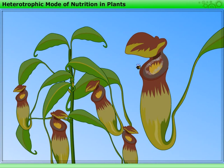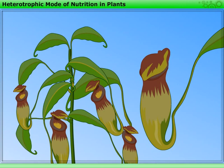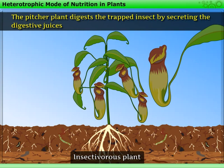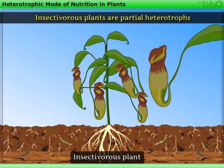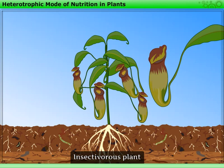Now let us see how this plant traps insects. When an insect lands in the pitcher, its lid closes. Thus, the insect gets trapped and entangled in the hairs. The pitcher plant digests the trapped insect by secreting digestive juices. Thus, insectivorous plants are partial heterotrophs.